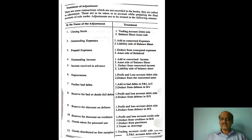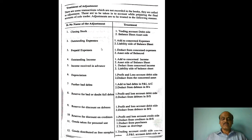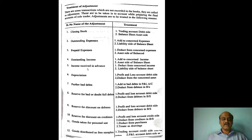Prepaid expense and outstanding expense: for the balance sheet, outstanding expenses are added and prepaid expenses are deducted. For outstanding income, it is added to the concerned income. Outstanding income is treated as an asset in the balance sheet. Income received in advance — such as commission received in advance — is less from the concerned income.